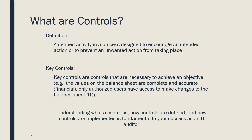Now, let's talk about key controls. Because there may be several, even hundreds of controls in an organization. However, typically only a subset of them are considered key controls. Key controls are the controls that are really vital to protecting the integrity of the systems from a compliance perspective, or from any of the other risk area perspectives. As noted on the slide, key controls are required to achieve an objective, and the failure of a key control typically has significant impact on the organization. If a non-key control fails, that's sometimes okay. But if a key control fails, that usually means there are bigger problems.